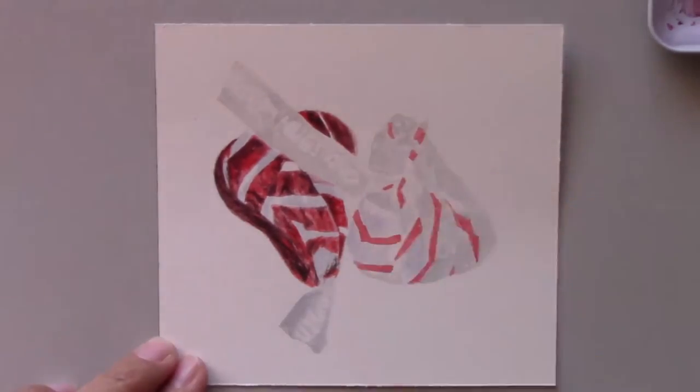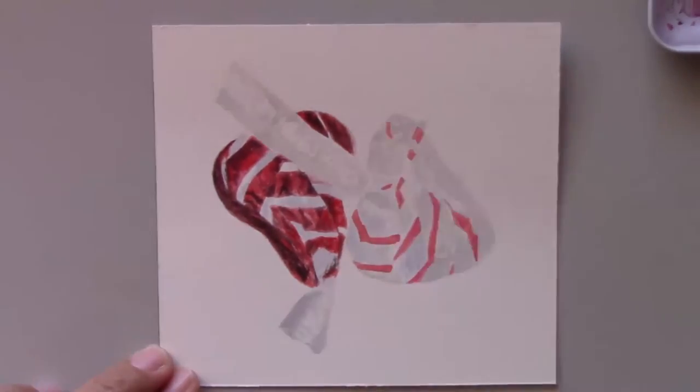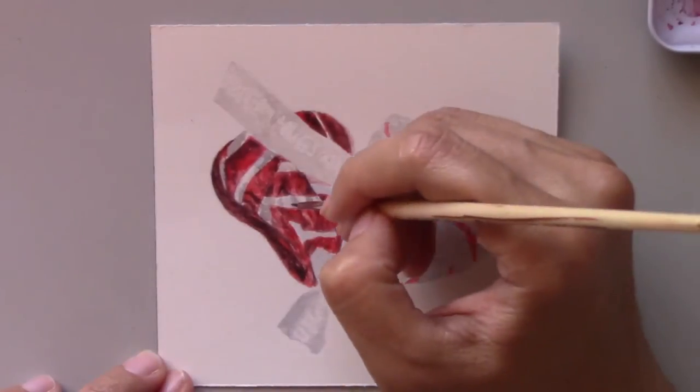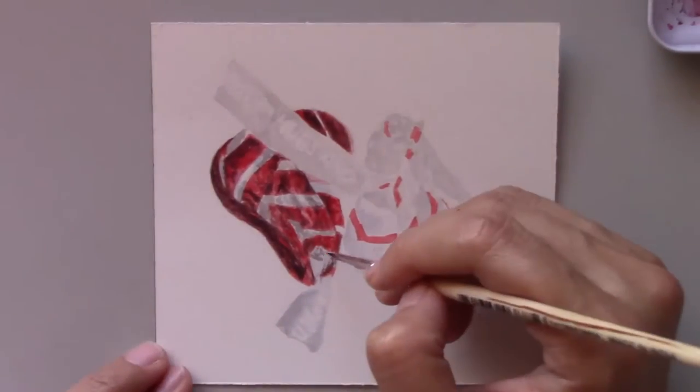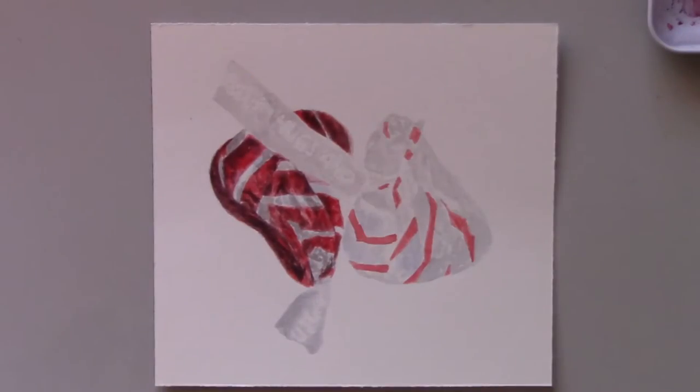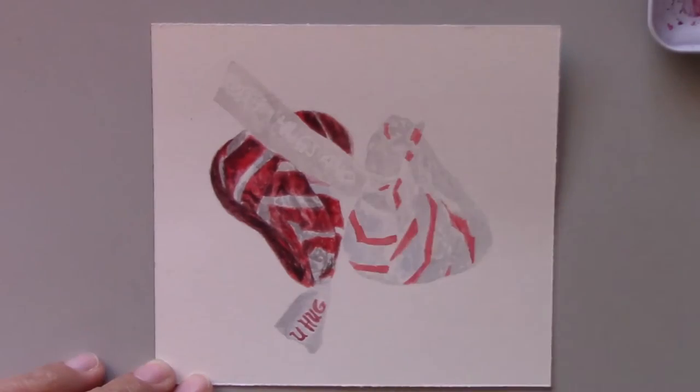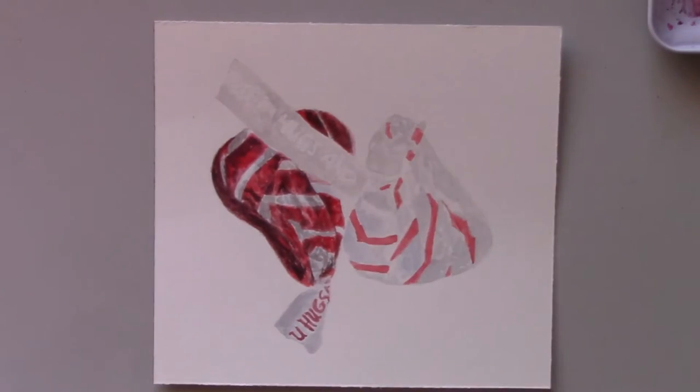This painting took a while to complete so I won't show the whole process. I will complete it off camera. You can see here that the chocolate's red wrapper is beginning to look like a real Hershey's Kiss. All I need to do now is to add the wordings and I'll be done with the first one.